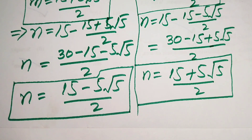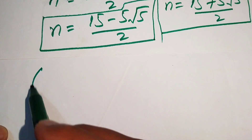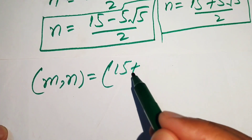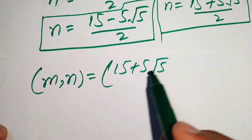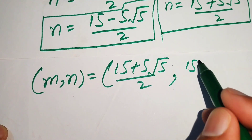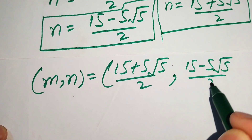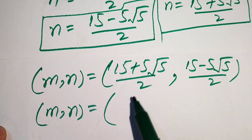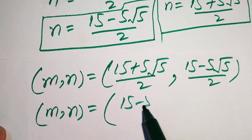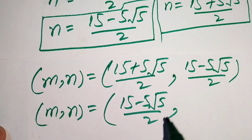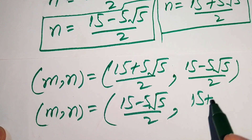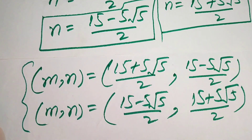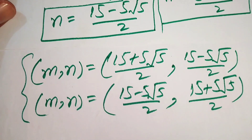So we have two solutions for the given system. Solution 1: m = (15 + 5√5)/2, n = (15 − 5√5)/2. Solution 2: m = (15 − 5√5)/2, n = (15 + 5√5)/2. Thank you so much for watching this video — please subscribe to my channel for more videos.